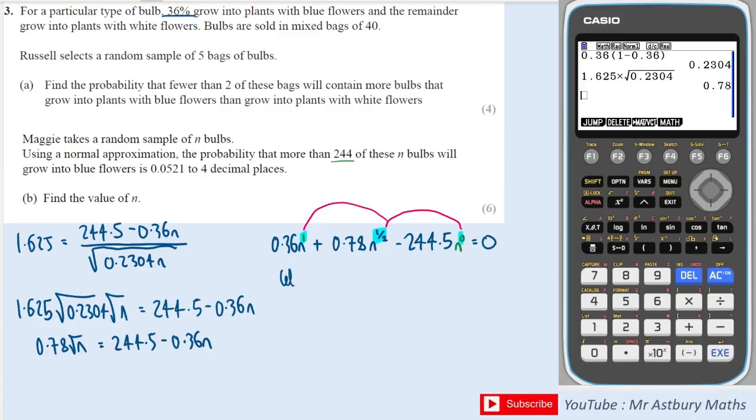So I could say let n to the half equal x. Then squaring both sides gives me that n is equal to x squared and I could write 0.36x squared plus 0.78x minus 244.5 equals 0.